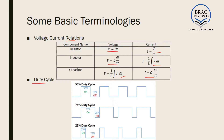Another new terminology we will encounter is duty cycle. In power electronics, we turn a particular switch on and off at a certain frequency, and at that point duty cycle becomes important. Duty cycle is the parameter that states the time the switch is on divided by the total time period. In this case, 50% of the time the switch is on and 50% it is off, so the duty cycle is equal to 0.5.